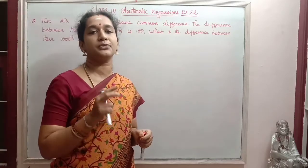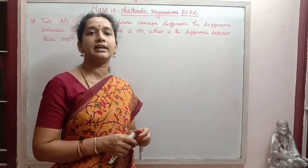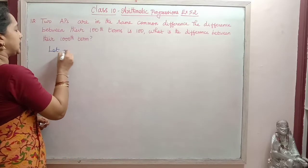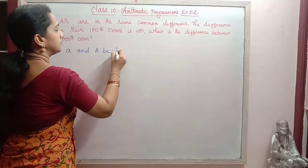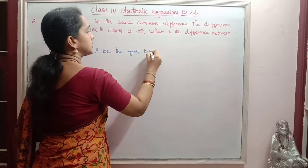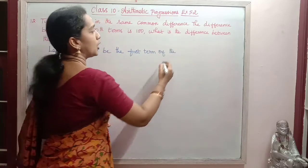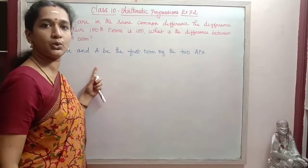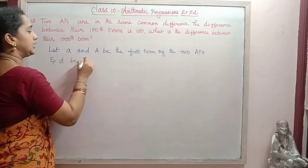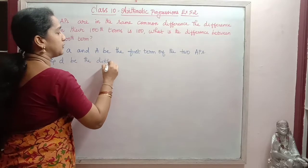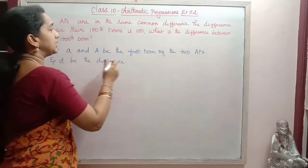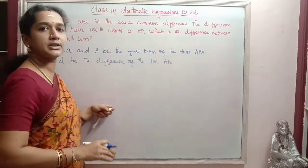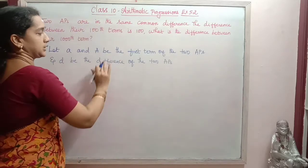We will take the first terms of the two APs. For differentiation, we will take one as small letter 'a' and the other as capital letter 'A'. Let a and A be the first terms of the two APs. And let D be the common difference. Since both differences are the same, we will take it as D itself.